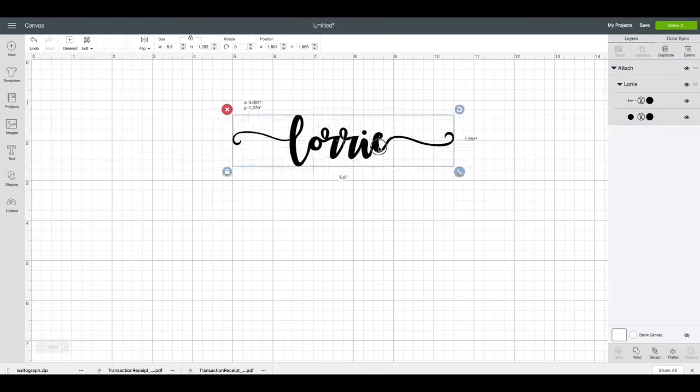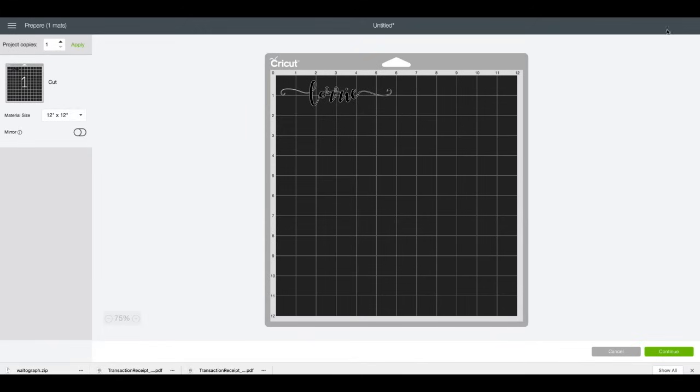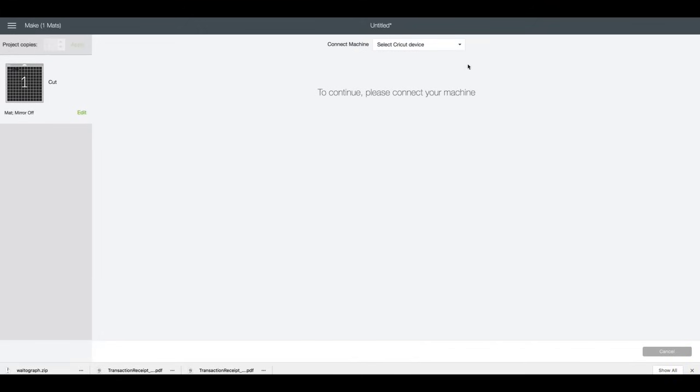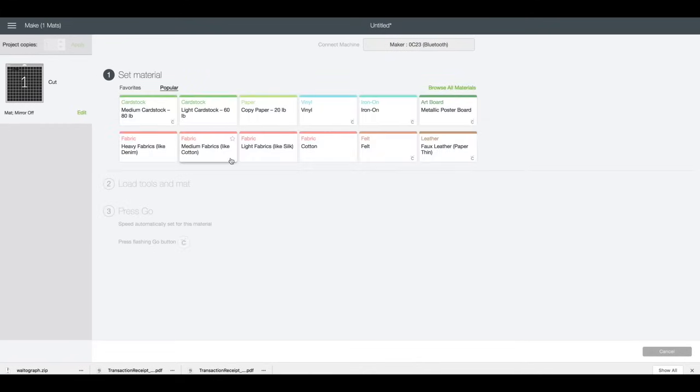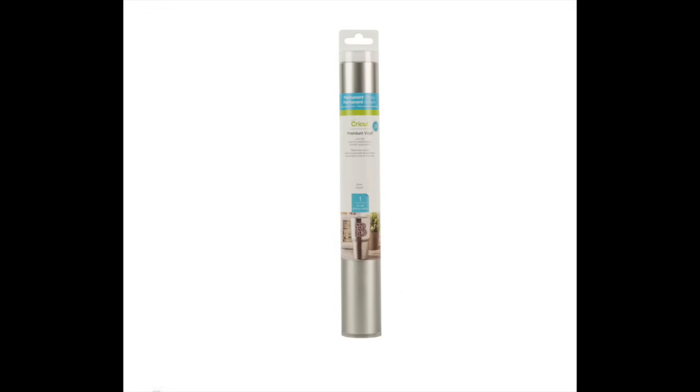The first thing you're going to do is set up your design in Design Space. I have set up my name. Once you have it set up you're going to click make it. You do not mirror it. You're going to choose your machine and then you're going to choose vinyl and go ahead and cut that out on your Cricut Explorer or your Cricut Maker.